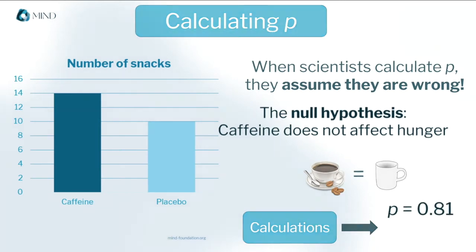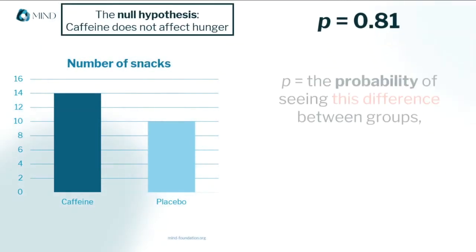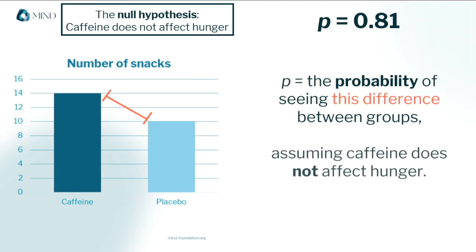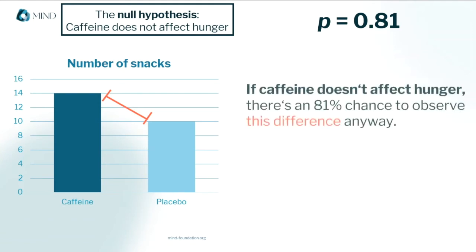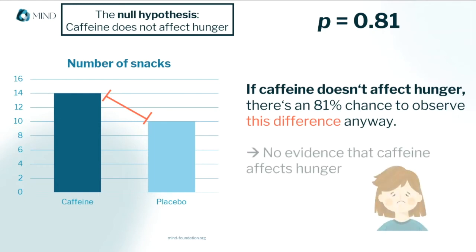And let's say I get 0.81. So that p-value is the probability of seeing this difference between groups assuming that caffeine does not affect hunger. A p of 0.81 means that even if caffeine has no effect on hunger in the real world, there's an 81% chance that I could still find this difference in my data anyway. So even though I see a difference in my data, the p-value says it's not enough evidence that caffeine affects hunger.